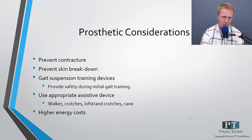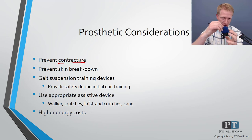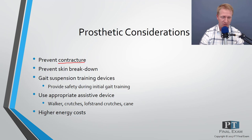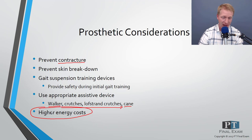Key PT considerations with amputees: prevent contracture — keep the knee in full extension at rest after transtibial amputation to avoid a knee flexion contracture. Prevent skin breakdown by always monitoring skin integrity and keeping it clean and dry. Use gait suspension training harnesses for safety. Use appropriate assistive devices, progressing from a walker to a cane. Recognize that all prostheses have a higher energy cost than normal anatomical gait.